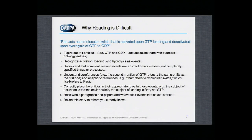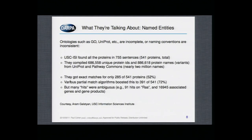If you can do it for one sentence, then you have to read a whole paragraph or a whole paper and be able to tell a causal story about what happened. I thought naively that everything biologists talk about is represented in a biological database or ontology somewhere. Gene Ontology and Pathway Commons collectively contain about two million proteins. So our team at USC looked at 755 sentences from papers, found 541 proteins, looked them up in Gene Ontology and Pathway Commons, and only found half of them. They built a fancy pattern-matching algorithm and only found three quarters.